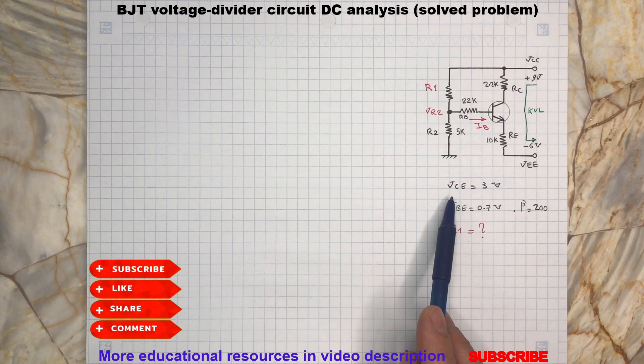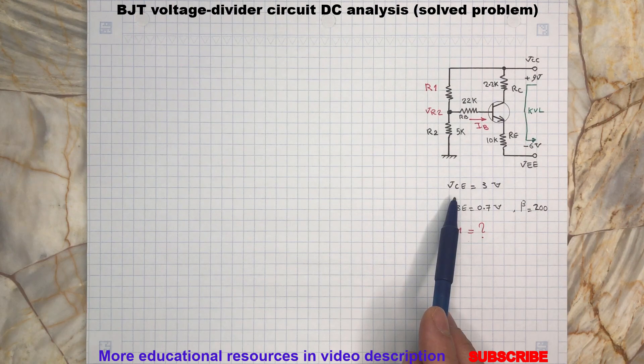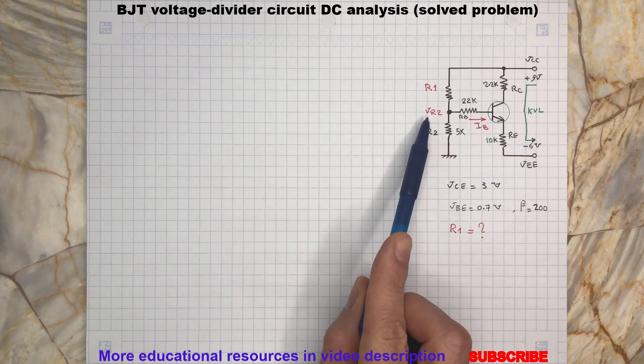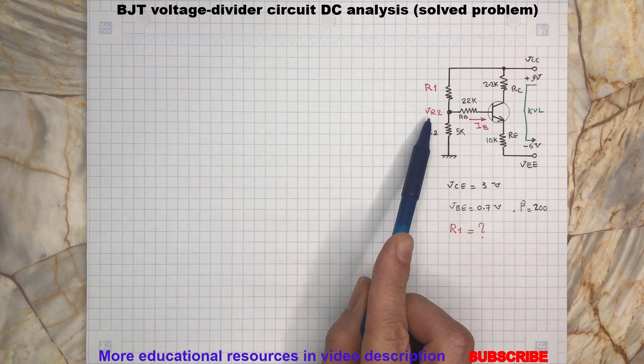In this circuit the collector emitter voltage is given and we are interested to determine the resistance value of R1. Here's how I approach to solve this problem. I will try to determine the voltage value at node VR2.